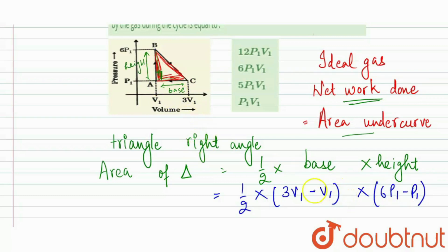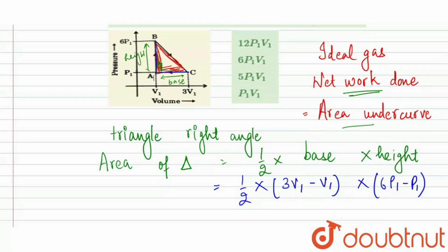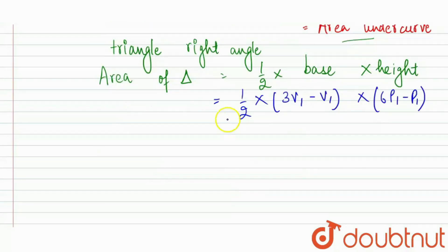So by doing this, we will have the value for AB and AC. So it will be one by two into 2V1 into 5P1. So 2 and 2 will be cancelled out. So our answer will be 5P1 V1.